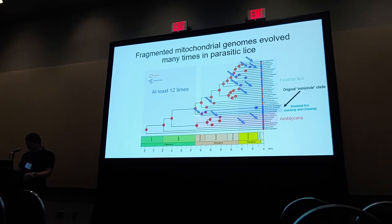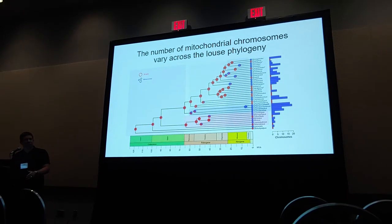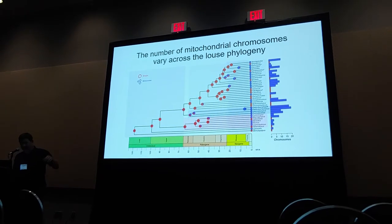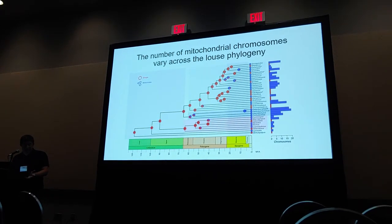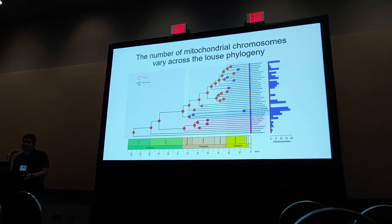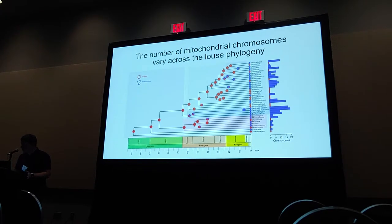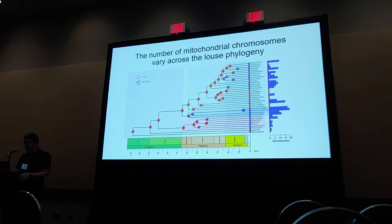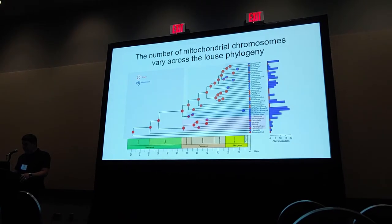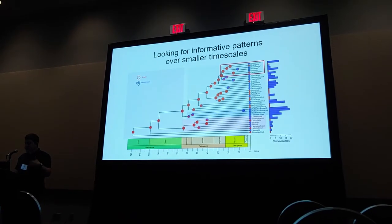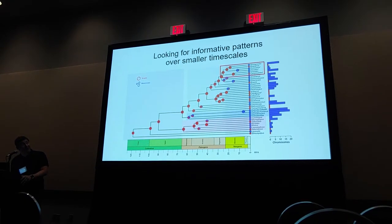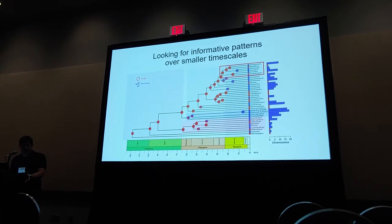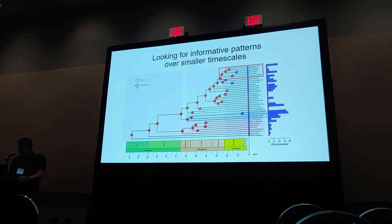If we look at the number of chromosomes recovered, they're also quite variable. The red bars represent single chromosomes and the blue bars represent fragmented genomes, indicating chromosome count. They range between 2 and 20 chromosomes, and there doesn't seem to be a lot of predictable structure based on phylogeny. We wanted to zoom in and look for informative patterns within a clade — maybe over 20 or 30 million years rather than 100 million — to see if patterns make more sense at a finer scale.